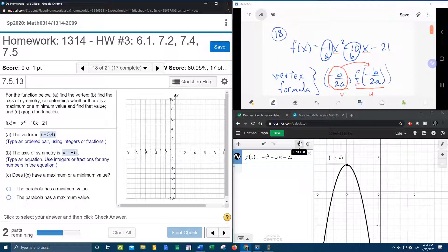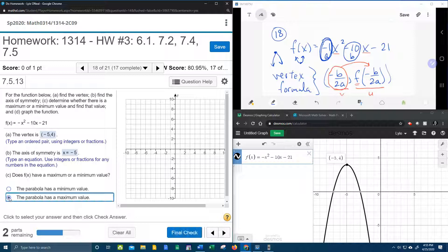Did you notice that a was negative? So if a is negative, that means that your parabola opens down and your vertex will be a max. If a is positive, then your parabola opens up and your vertex will be a minimum. So our parabola is going to have a maximum.